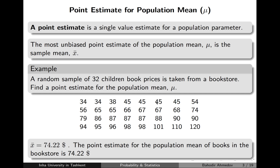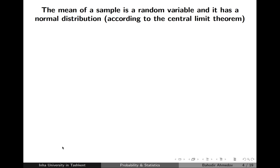Before we start talking about how to construct the confidence interval, let's discuss this random variable. If I take one sample and calculate the average it's going to be 74.22, but if I take another sample it's going to be a different number. So the sample average is actually a random variable, and according to the central limit theorem this random variable has a normal distribution.